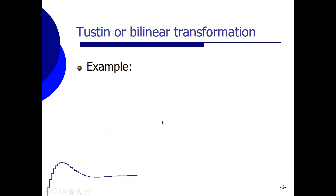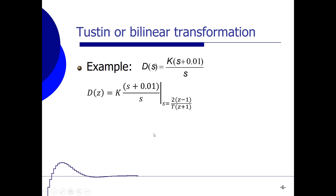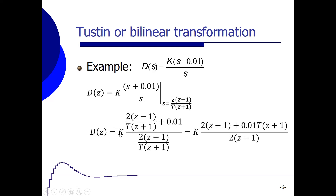Let's use the same PI controller example and discretize it using the Tustin transformation. We replace s by (2/T) · (z − 1)/(z + 1), giving the digital controller D equal to k times [2/T · (z − 1)/(z + 1)] + 0.01 divided by [2/T · (z − 1)/(z + 1)]. We multiply numerator and denominator by T · (z + 1) to eliminate fractions, leaving k · [2(z − 1) + 0.01 · T · (z + 1)] over 2(z − 1).